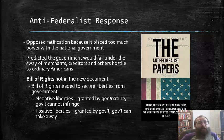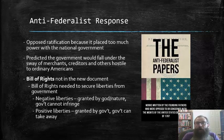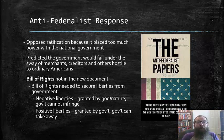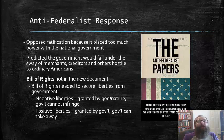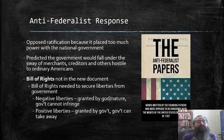The Anti-Federalists generally opposed ratification because they feared it placed too much power with the national government. In efforts to correct the weaknesses of the Articles of Confederation, Anti-Federalists believed that the Constitution had gone too far in the other direction. They predicted that the government would fall under the sway of merchants, creditors, and others hostile to ordinary average Americans. Their biggest sticking point was that a Bill of Rights was not included in the new document, and they were very vocal about the need for a written Bill of Rights to secure liberties from the government.